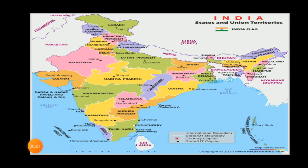The capital of Meghalaya is Shillong. Aizawl is the capital of Mizoram. The capital of Nagaland is Kohima. Bhubaneswar is the capital of Odisha.